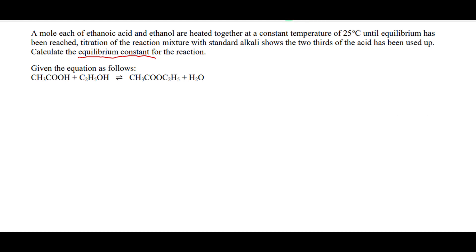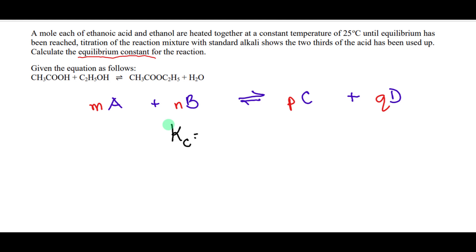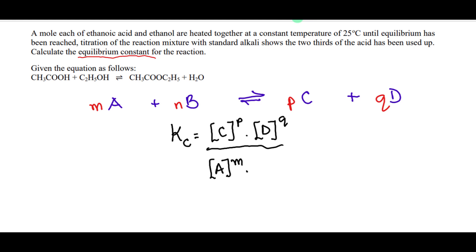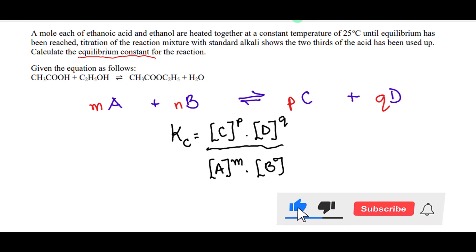Let's consider this hypothetical equation: A plus B giving us C plus D. Let the number of moles of the reactants and products be M, N, P and Q respectively. The equilibrium constant of this reaction can be expressed as the active mass of product C times the active mass of product D, divided by the active mass of reactant A times the active mass of reactant B.